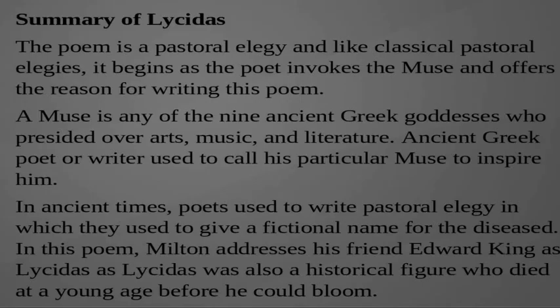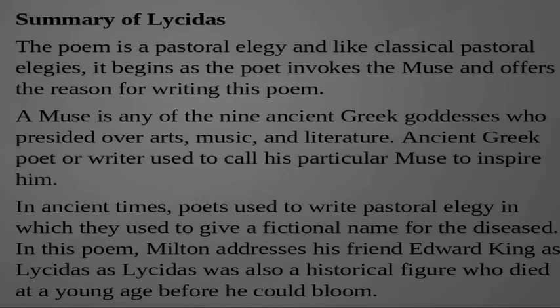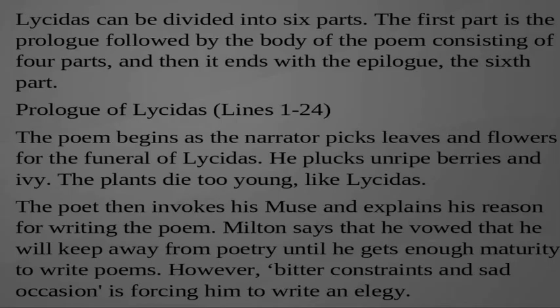Summary of Lycidas. The poem is a pastoral elegy and, like classical pastoral elegies, it begins as the poet invokes the muse and offers the reason for writing the poem. A muse is any of the nine ancient Greek goddesses who presided over arts, music and literature. Ancient Greek poets used to call upon their particular muse to inspire them. In ancient times, poets used to write pastoral elegies in which they gave a fictional name for the deceased. Lycidas can be divided into six parts: a prologue, four body sections, and an epilogue.